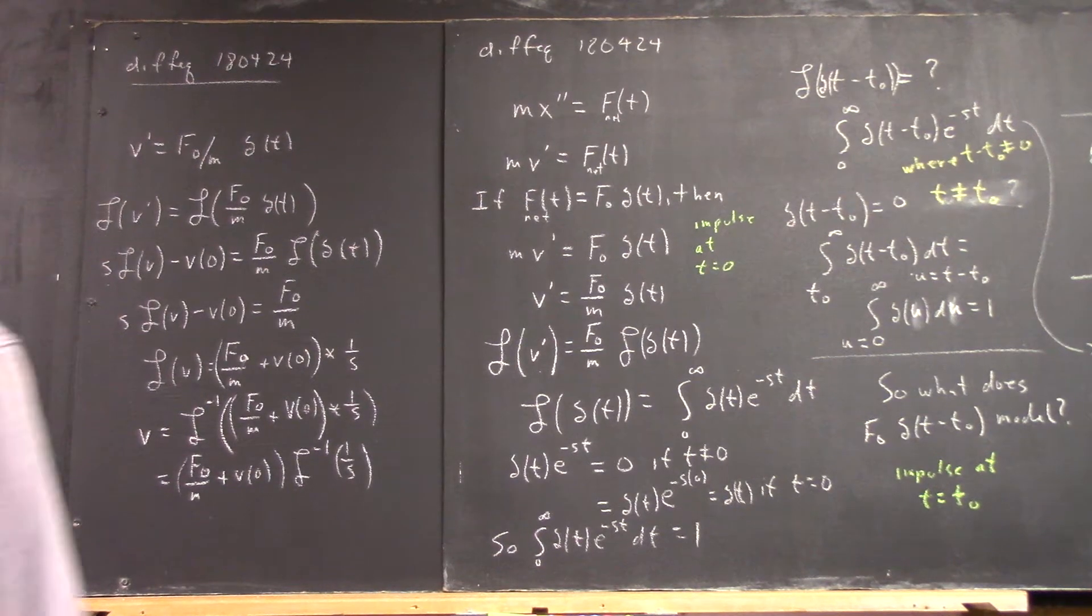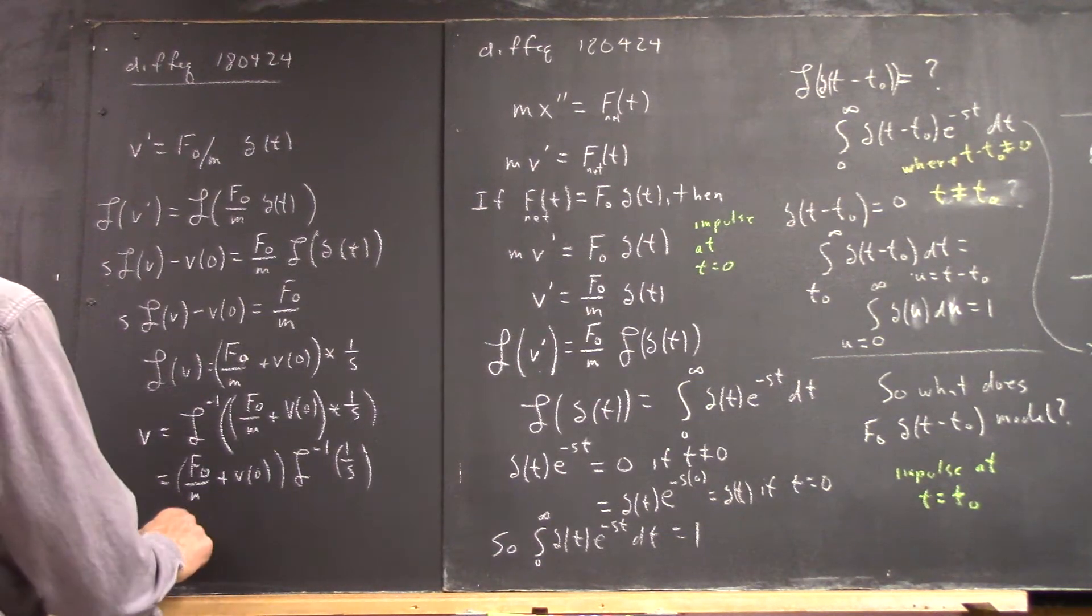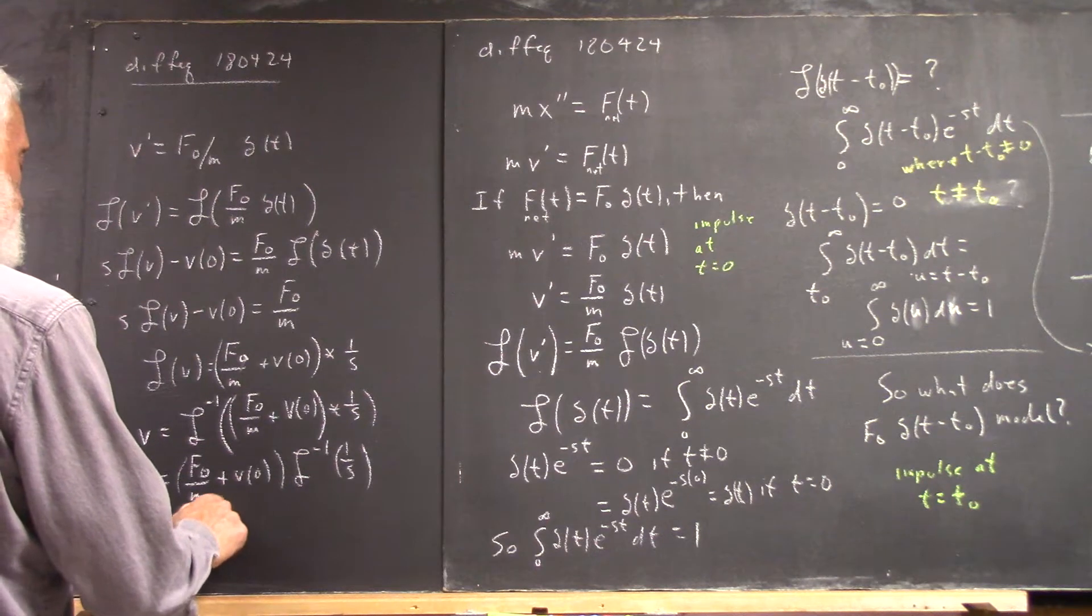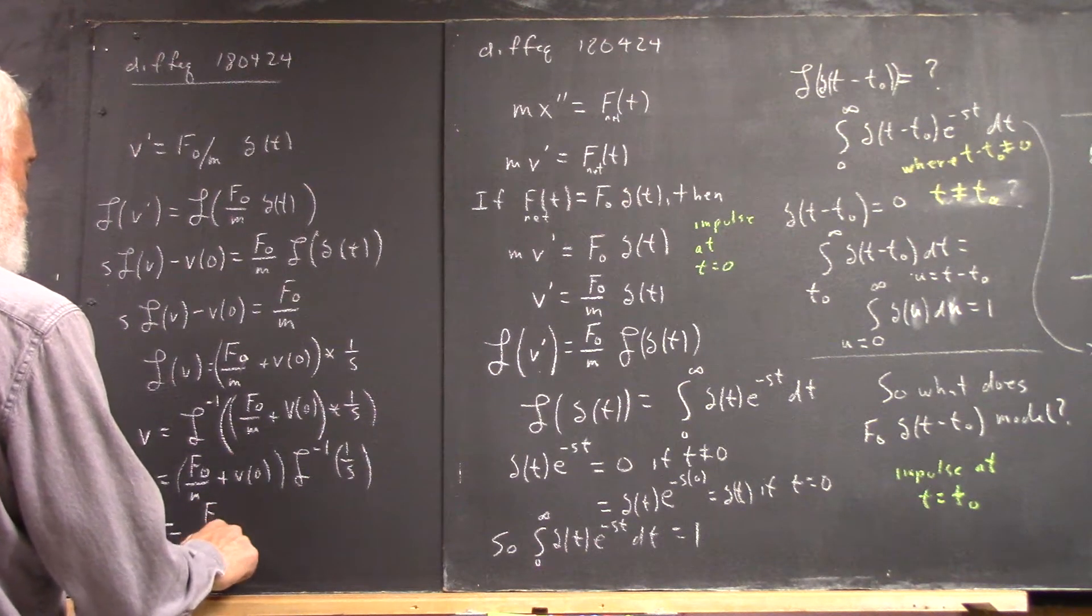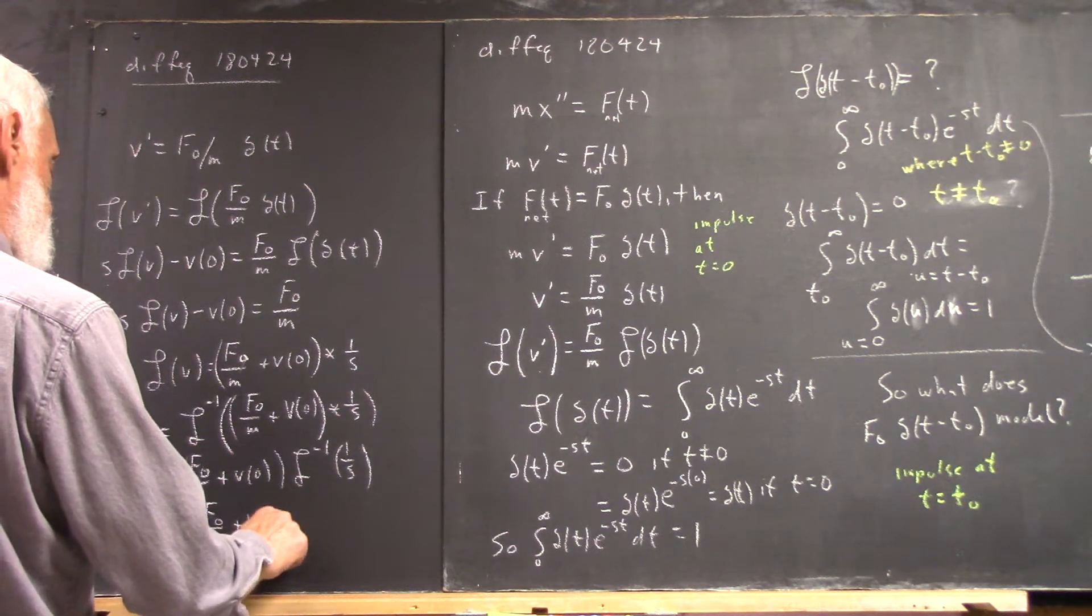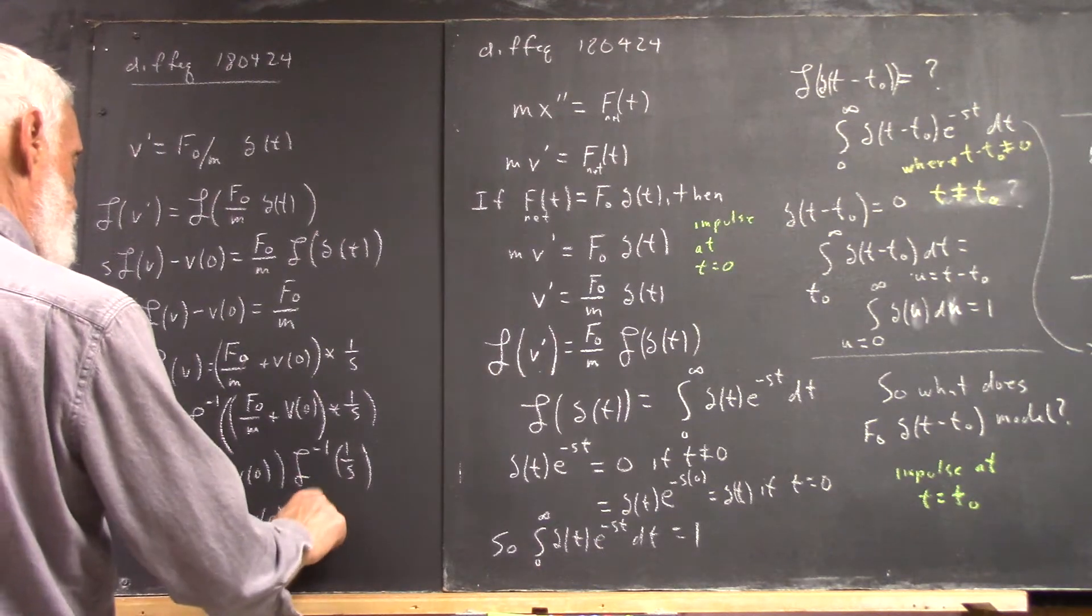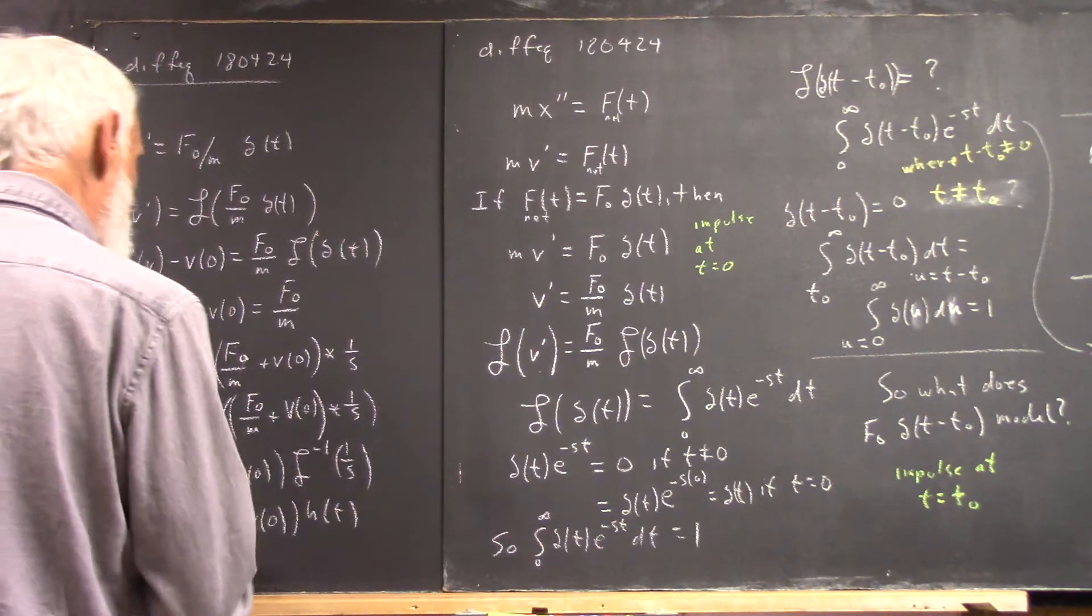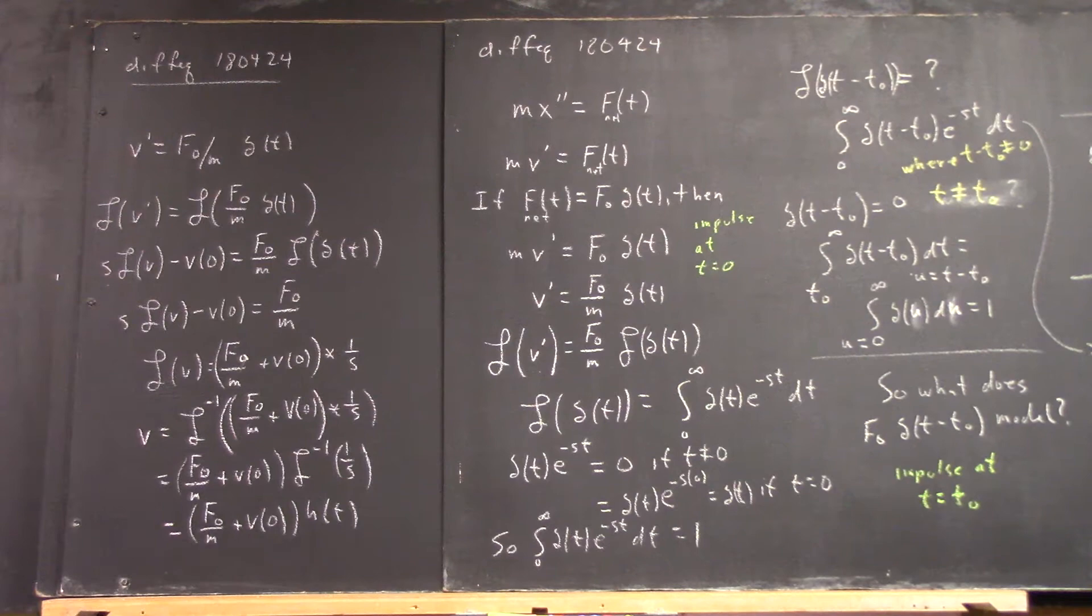So that ends up being h of t, that's a Heaviside function. Now this is just f naught over m plus v of 0 times the Heaviside function.